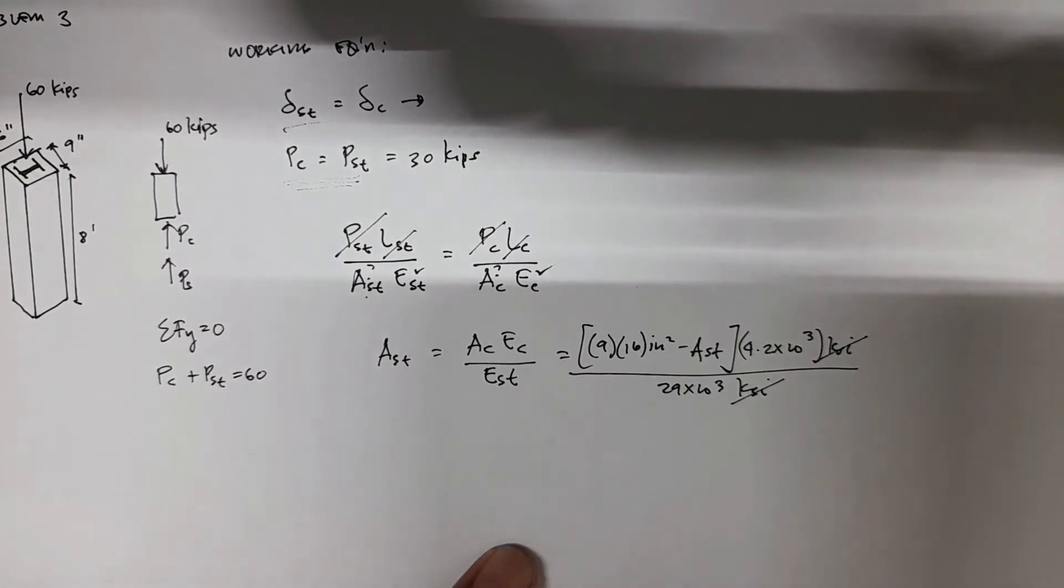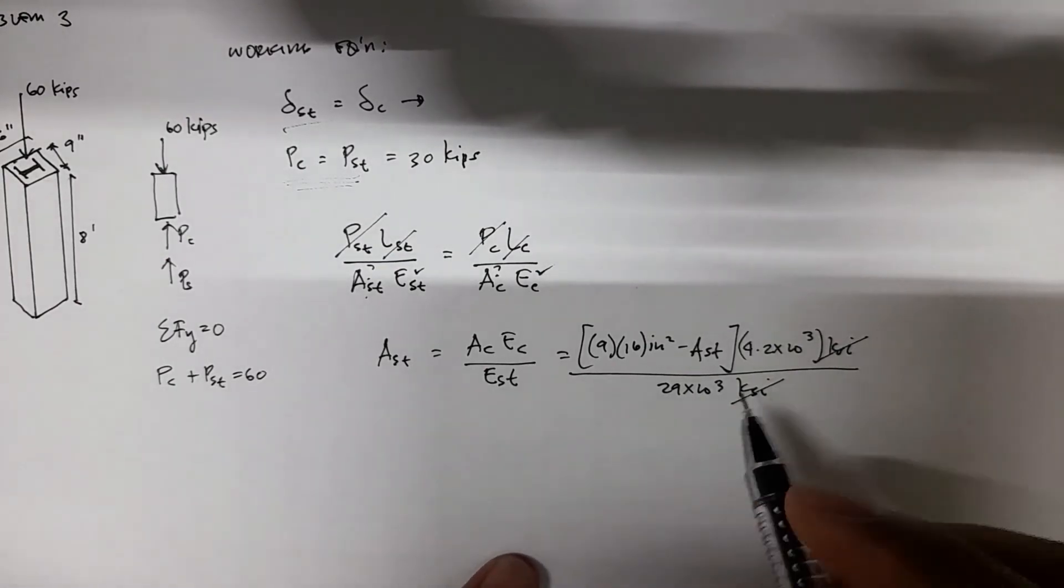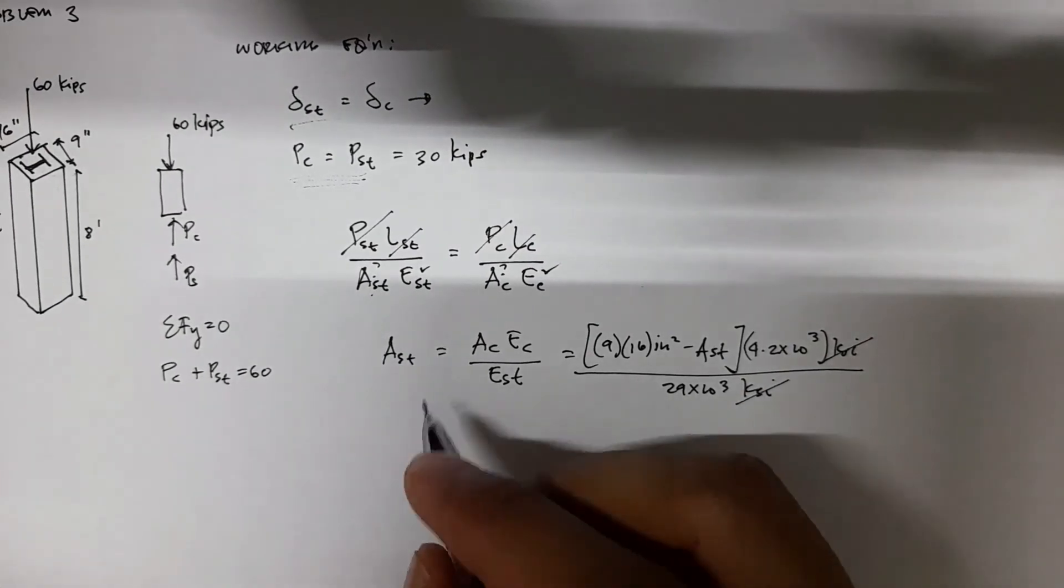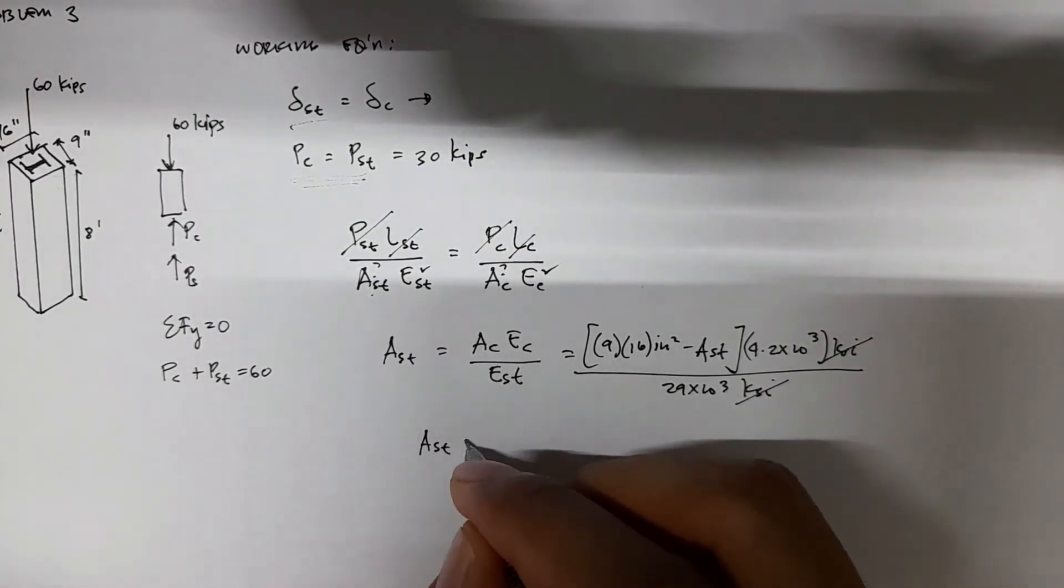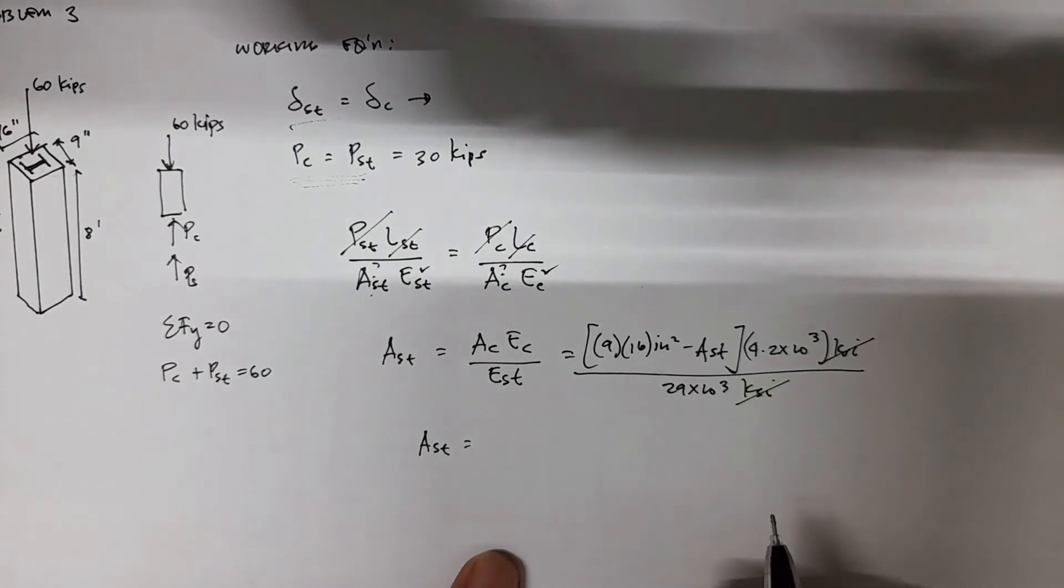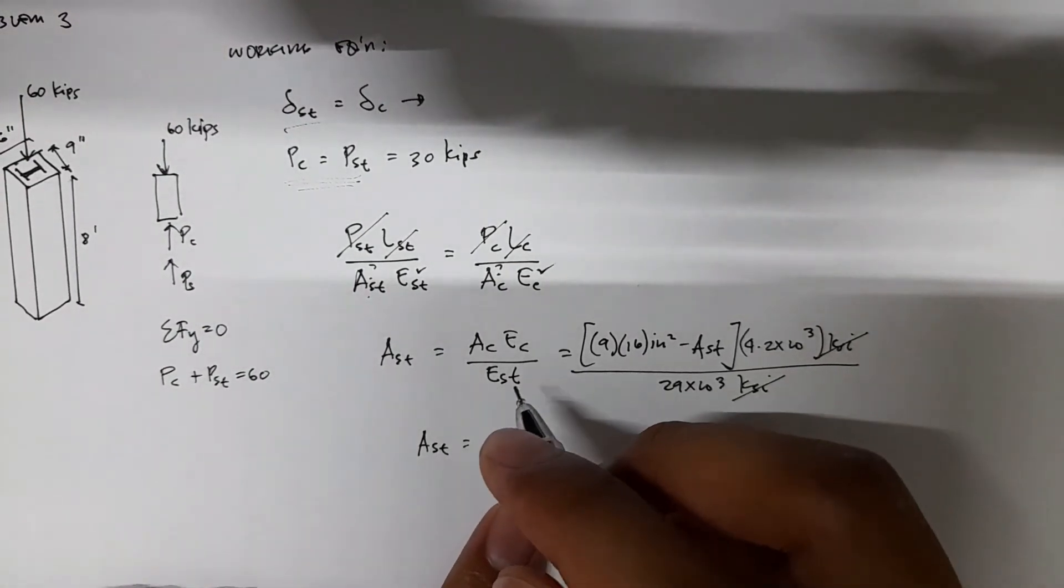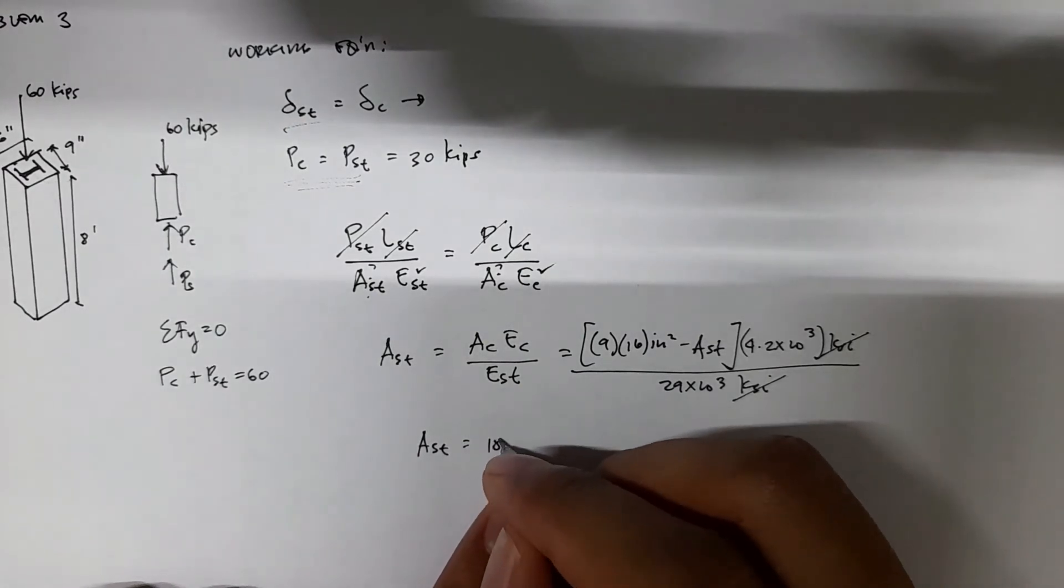Now we have Ast on both sides. Solving, we get Ast equals 18.2 inches squared.